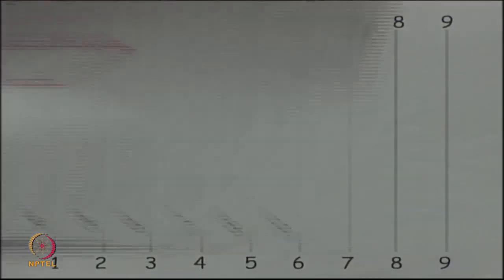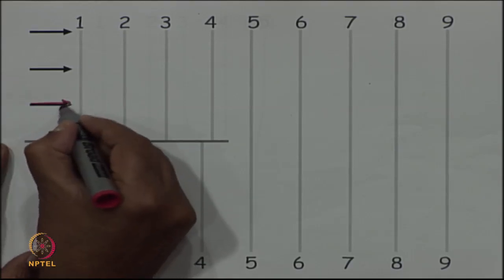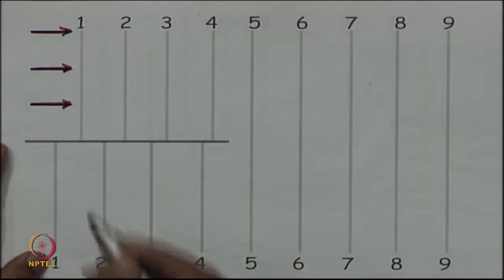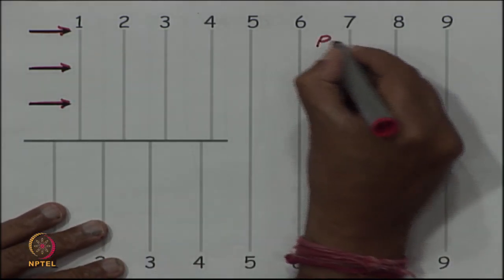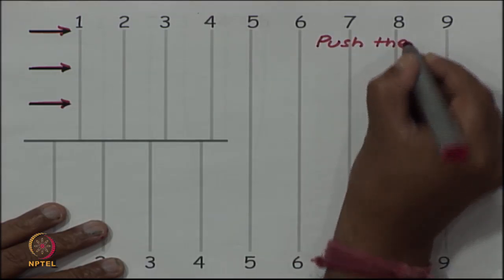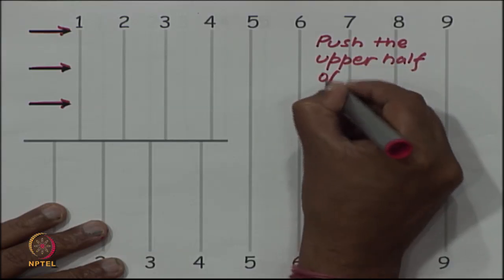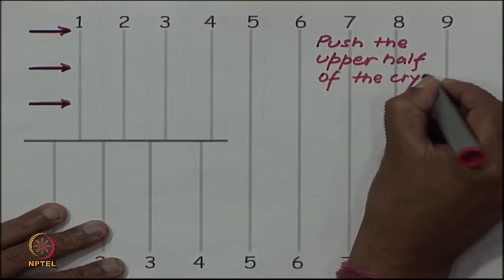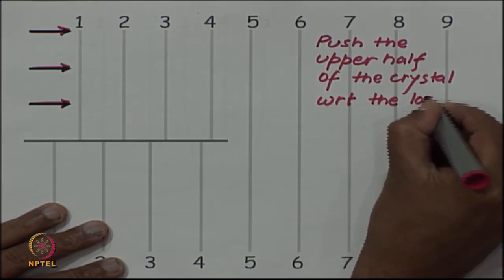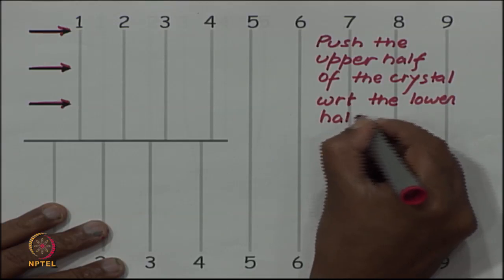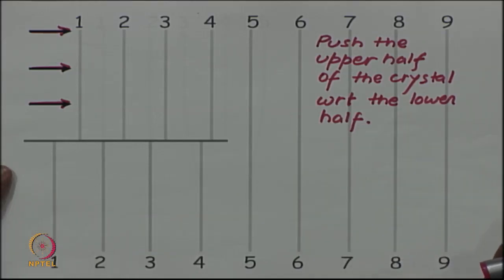Now, if I do that and then try to push, since I have made a cut I can try to push. These arrows are showing the push direction. I am pushing the upper half of the crystal with respect to the lower half across this plane.